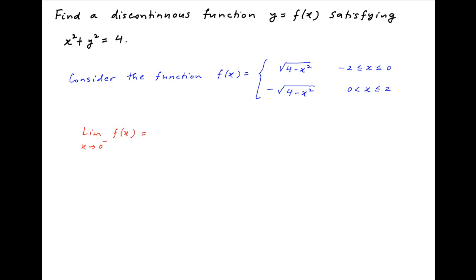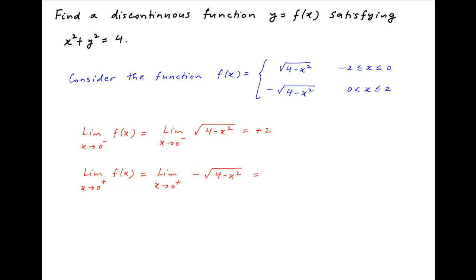The limit of this function as x tends to 0 from the negative side is equal to the limit of root of (4 minus x²) as x tends to 0 from the negative side, which is equal to plus 2. Similarly, the limit of the function as x tends to 0 from the positive side is equal to the limit of minus of root of (4 minus x²) as x tends to 0 from the positive side, which is equal to minus 2.